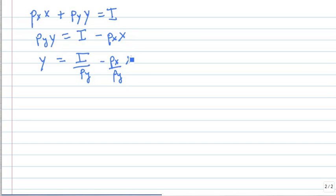There's the equation in slope-intercept form, and now let's plot that. We're going to graph this equation with x on the horizontal and y on the vertical. There's the y-intercept—it has no x, and the amount of y is I over py.